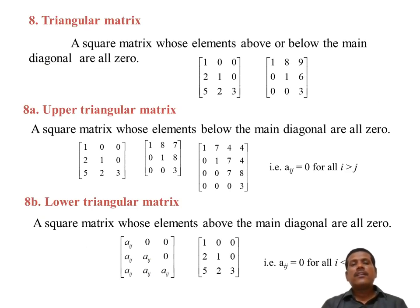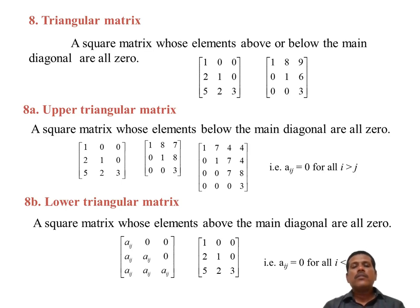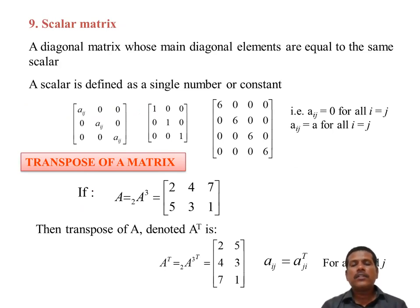Triangular matrix: a square matrix whose elements above or below the main diagonal are all 0. There are two types: upper triangular matrix and lower triangular matrix. In the upper triangular matrix, each non-diagonal element below the diagonal is equal to 0. In the lower triangular matrix, elements above the diagonal are equal to 0. Scalar matrix: each non-diagonal element is equal to 0 and all diagonal elements are equal to the same constant value — that is called scalar matrix.